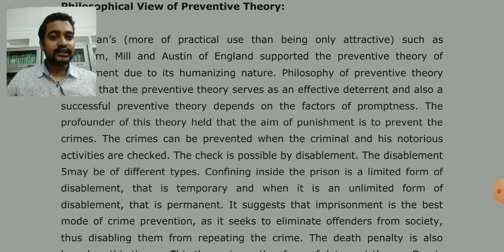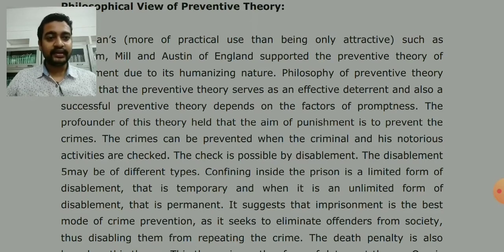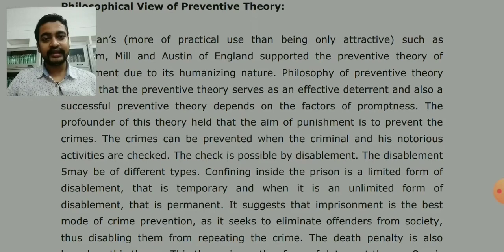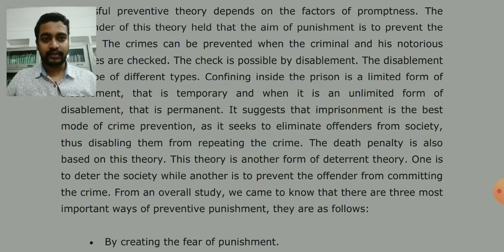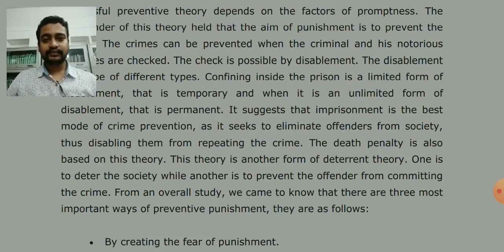The disablement may be of different types. Confining inside the prison is a limited form of disablement — that is temporary. When it is an unlimited form of disablement, that is permanent. If a person is confined in prison, it can be limited and temporary — at some point they will be released — or it can be unlimited when they are permanently disabled. As the text suggests, imprisonment is the best mode of crime prevention.